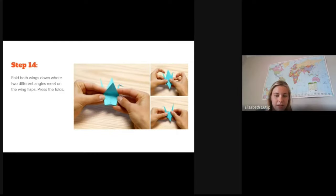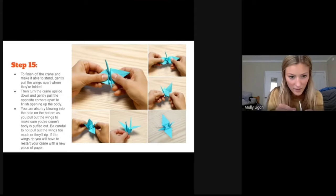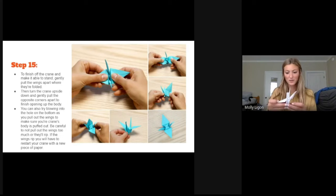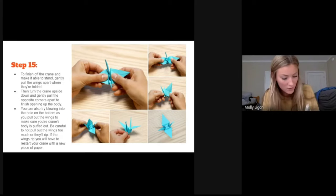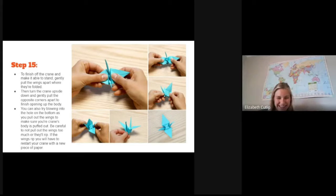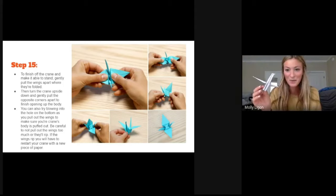All right. And then you want to fold down both wings. He's looking really good. There we go. Okay. So it says make sure that the crane is able to stand so you can just kind of pull apart the base a little bit. And then it kind of flaps its wings too when you do that. I think it's like you can blow in the bottom or something to try to fill it out a little more. I've tried this and I wasn't able to, but you guys definitely can. Stronger lungs than Molly.